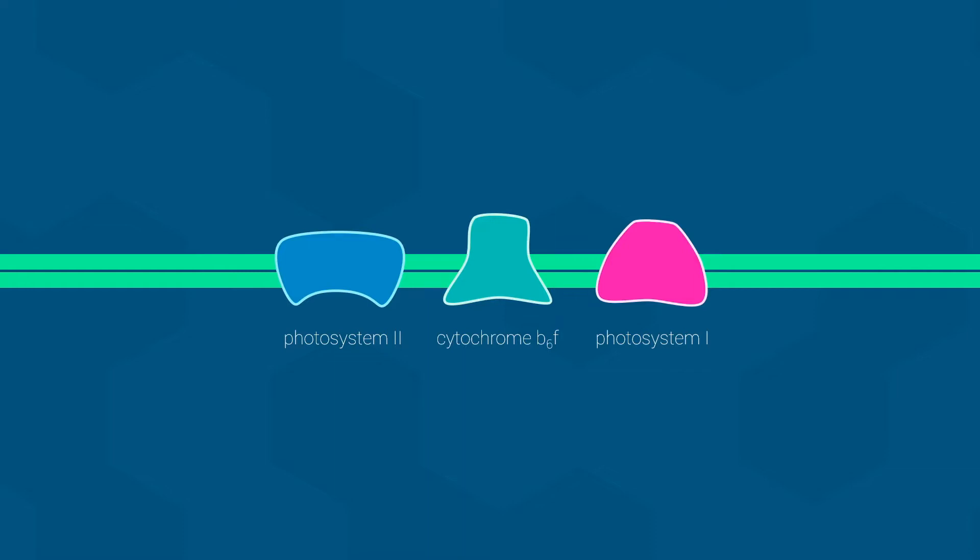Also like oxidative phosphorylation, photophosphorylation uses an electron transport chain. The three primary components we will look at are shown here: photosystem 2, cytochrome b6f, and photosystem 1. There are other components involved in photophosphorylation, but we only need to worry about these three for now.